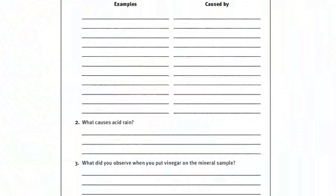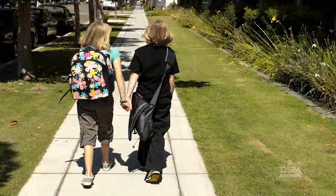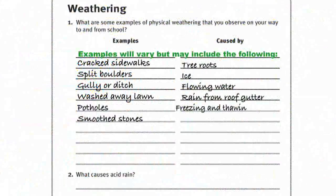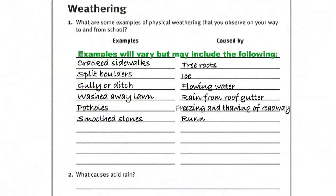To conclude Session 1, distribute a copy of Activity Sheet 1 to each student. Inform students that they are to look for signs of weathering on their way home and on their way back to school. Have them record their observations on the activity sheet.